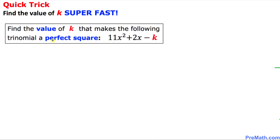Find the value of k that makes the following trinomial a perfect square. Let's focus on the middle number, the coefficient of x, which is positive 2. Let me write down 2 right up here. Always divide that number by 2 — that gives us 1. And then we are going to square whatever we got, so 1 squared is simply 1.